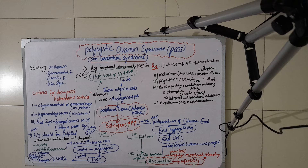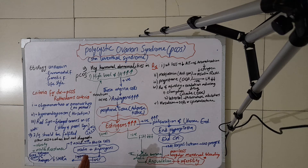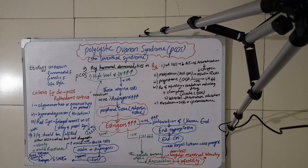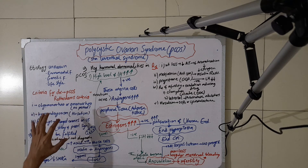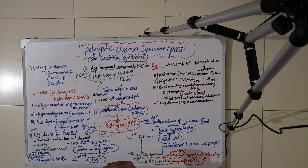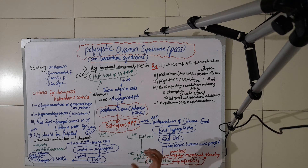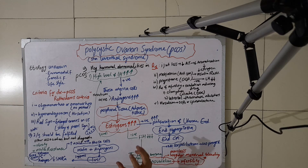Regarding investigations in a patient with polycystic ovarian syndrome, we mainly investigate hormone levels — some hormones will be elevated and some will be low. The main diagnostic criteria remain the Rotterdam criteria. Now let us discuss the treatment of PCOS. First of all, for those who are obese, weight loss is very important, as a decrease in weight causes a decrease in adipose tissue.